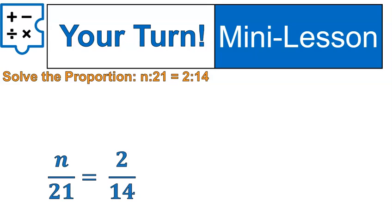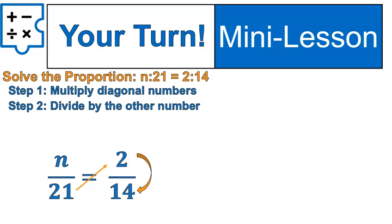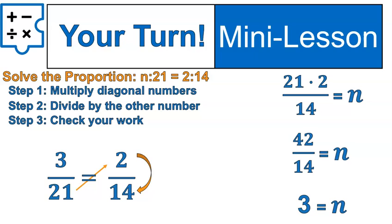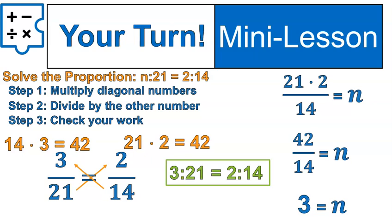Your turn. I want you to solve this proportion: n to 21 is 2 to 14. Try that one out. Welcome back. Our steps: multiply the numbers that are diagonal, then divide by the remaining number. So it ends up looking like this: 21 times 2 divided by 14. 21 times 2 is 42, and divided by 14 gives us 3. 3 equals n. I'm going to substitute 3 in for n, then check my work using cross-multiplying. 14 times 3 is 42, and 21 times 2 is 42. Therefore, this is correct. I know that 3 to 21 equals 2 to 14, and my n value equals 3.